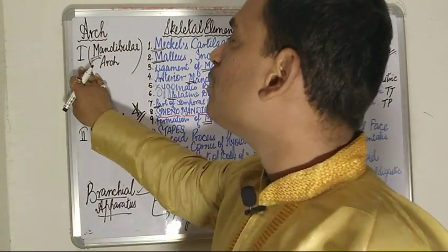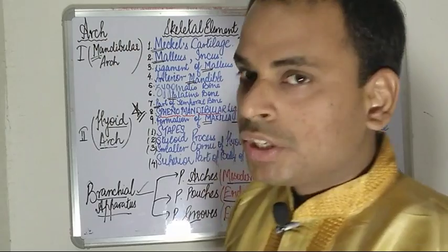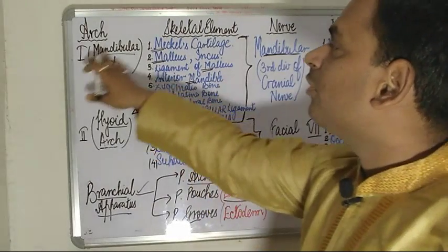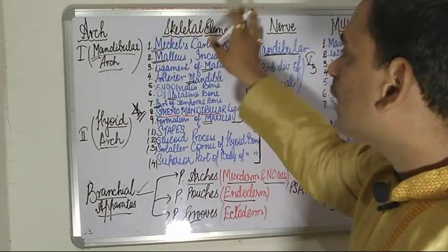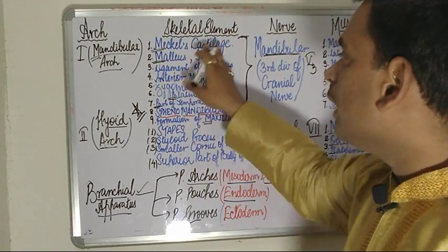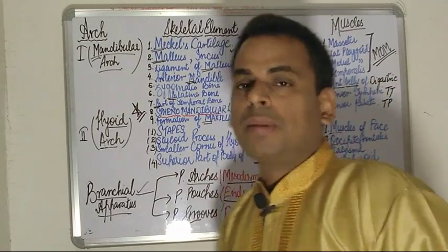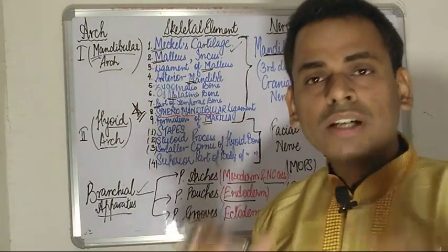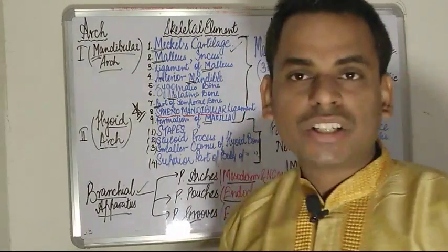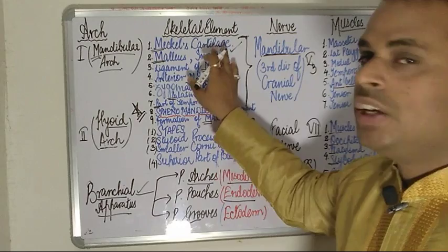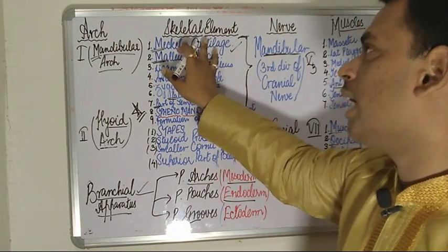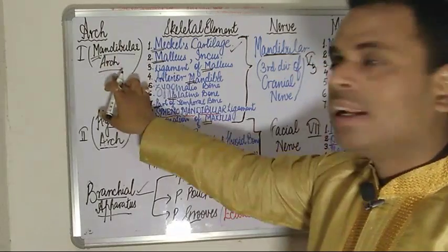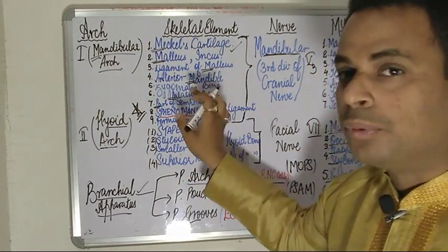Beginning with the first arch: it is called the mandibular arch. The skeletal elements derived from it are basically Meckel's cartilage. Meckel's cartilage, after ossification, is going to form the malleus and the incus. So the malleus and incus bones of the ear ossicles are derivatives of the mandibular first arch.